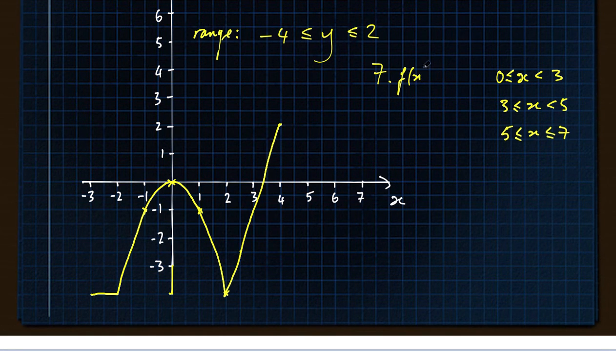So the function f of x equals, first one is just y equals x, first straight line on that graph. Second is horizontal line, y equals 3. And the third is going up with a gradient, it goes up to 7. So it's going up from 3 to 7, it's going up 4 over a space of 2, so it's got a gradient of 2x.